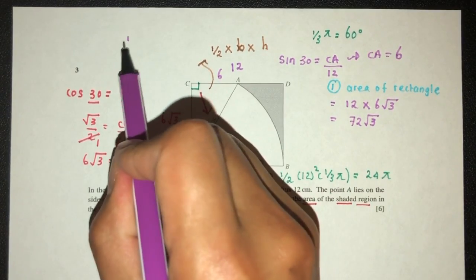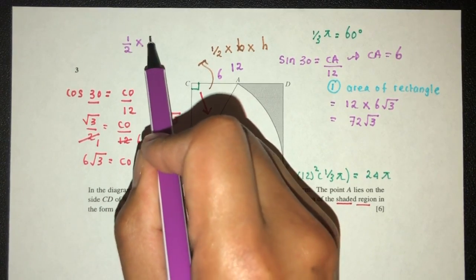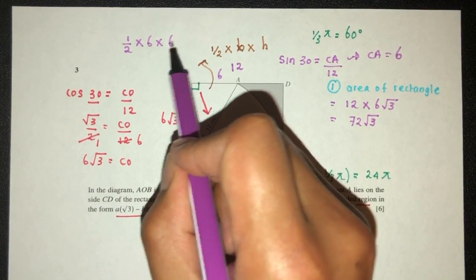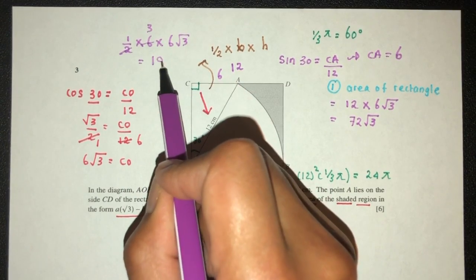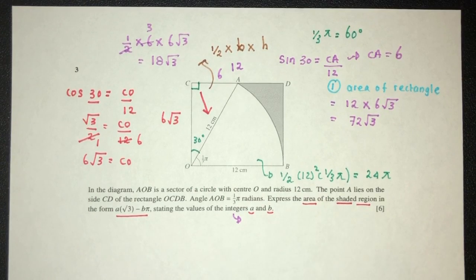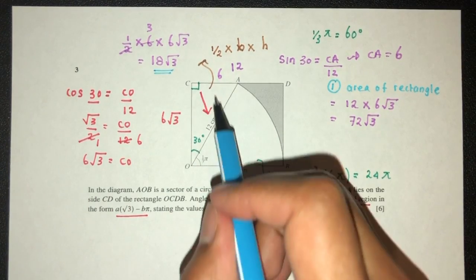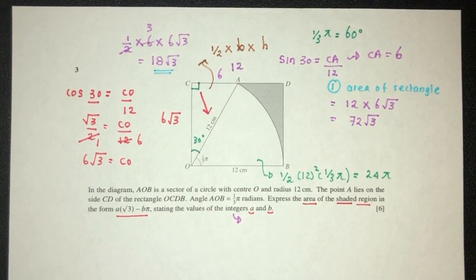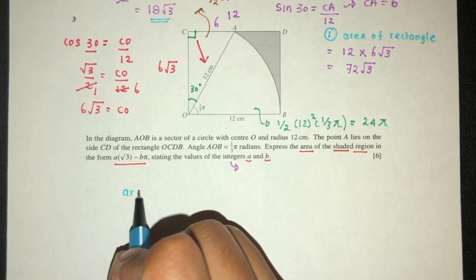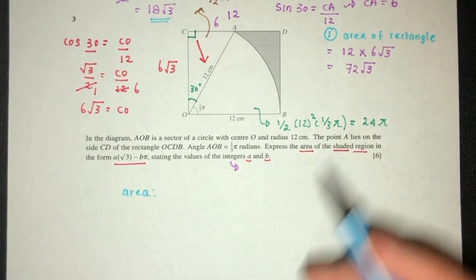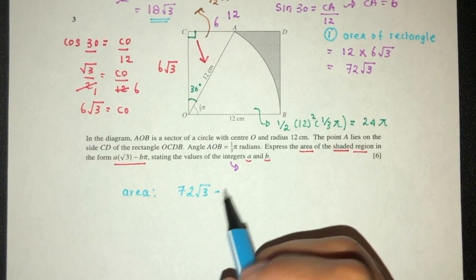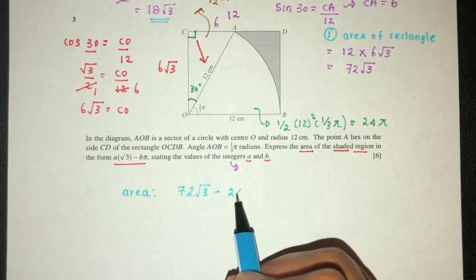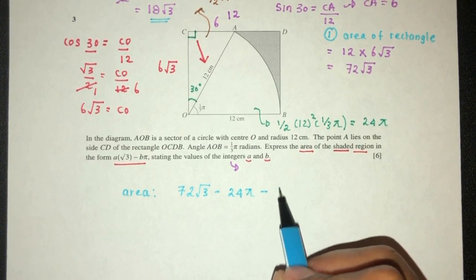So finally, that should be half times base times height. That should be 3 here, 3 here. That should be 18 root 3. So the area of the triangle is 18 root 3. And this is 24 pi. So finally, the area of the region we're trying to find as exact values should be what? It should be the whole thing minus the area of the sector and minus the area of this one.